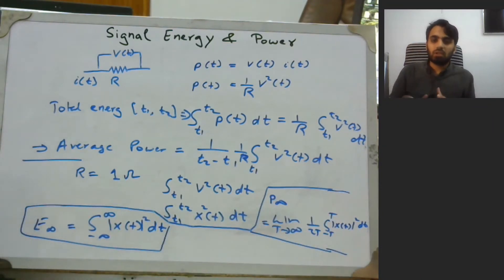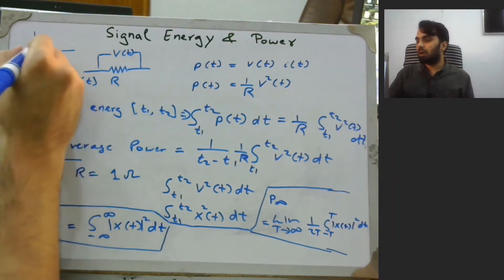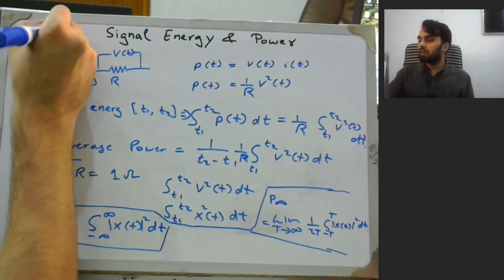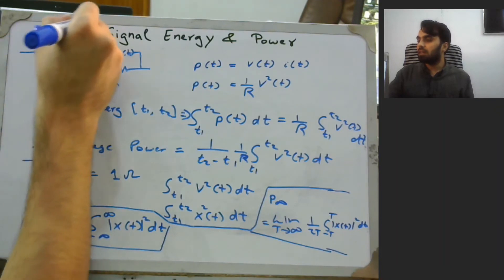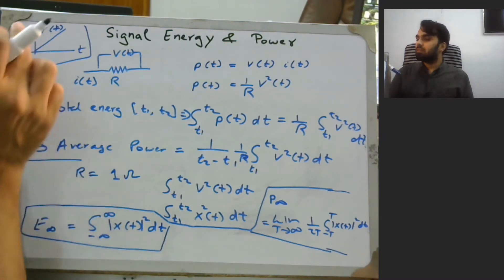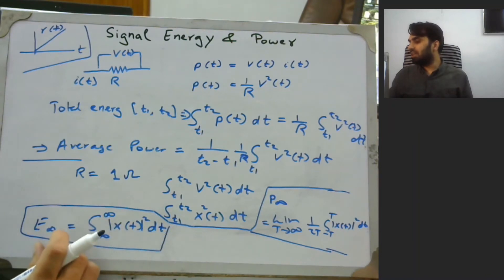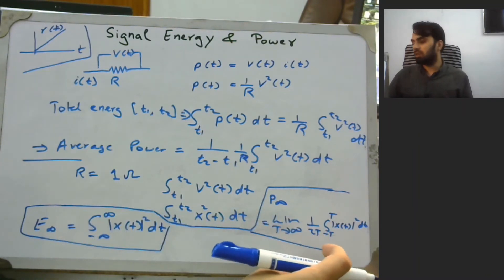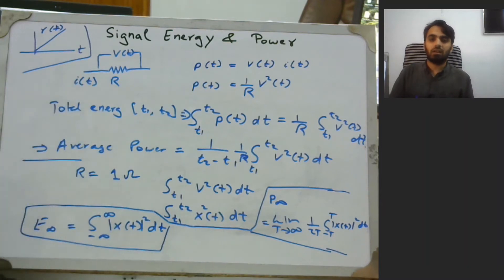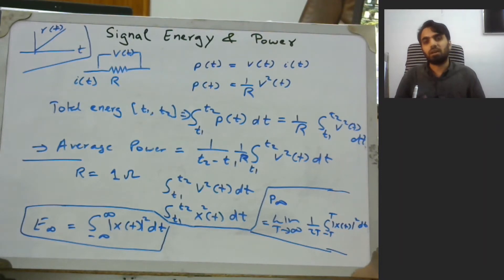Note that not all signals can be classified as energy signals or power signals. For example, a ramp signal can be classified as neither, because this continuously increasing signal cannot be quantified using E_infinity nor using P_infinity. So this signal is neither an energy signal nor a power signal. E_infinity and P_infinity are used for the understanding and characterization of different types of signals.